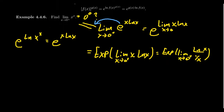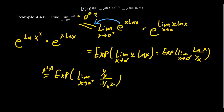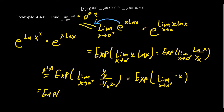Now you can see this has the indeterminate form infinity over infinity, so we can apply L'Hôpital's rule. Taking derivatives of top and bottom, we get 1 over x in the numerator and negative 1 over x squared in the denominator. That fraction simplifies to just negative x. So we get EXP of the limit as x approaches 0 from the right of negative x, which is EXP of 0, which equals e to the 0, which is 1.